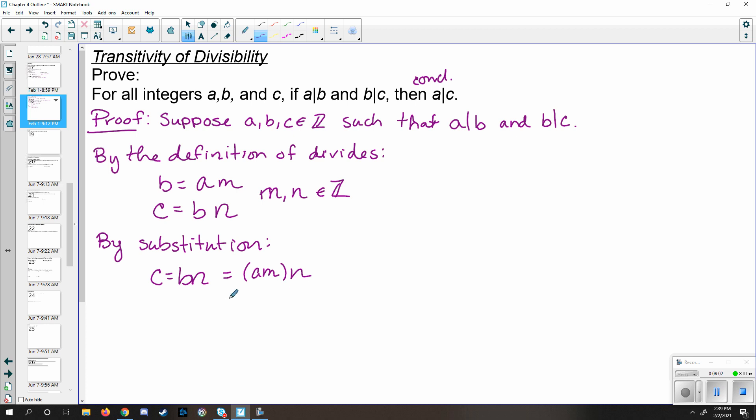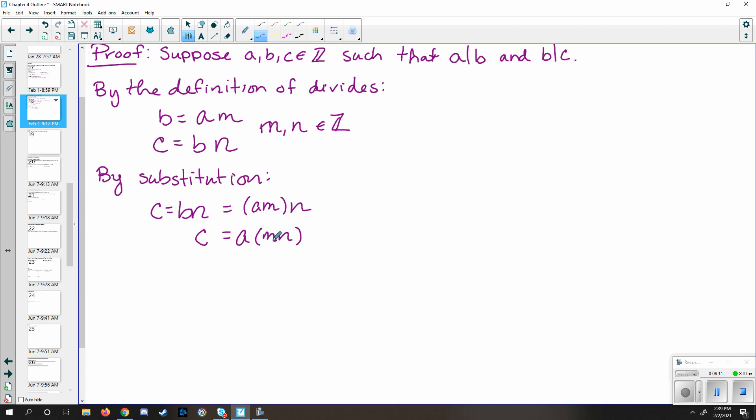In other words, c is equal to a times mn. And we know that m and n are both integers, and the product of integers, it's closed. So that means that we have an integer result here. So let's say let some other variable we haven't used yet, maybe k equals m times n.